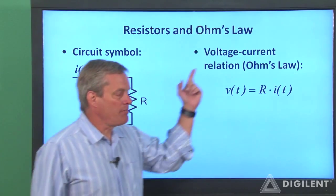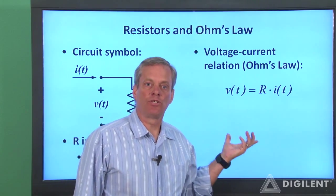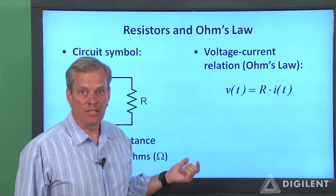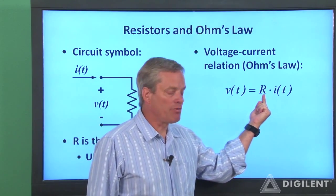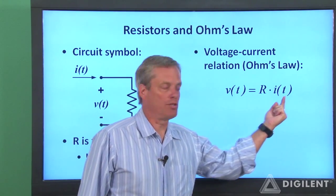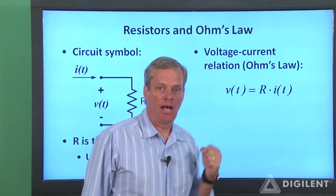The relationship between voltage and current for a resistor is called Ohm's law. Ohm's law states that the voltage across the resistor is equal to the product of the resistance and the current through the resistor. V is equal to R times I.